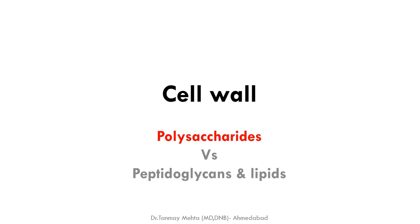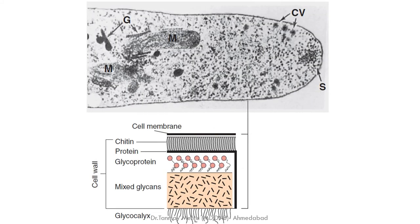Cell wall. The cell wall of fungi is made up of polysaccharides, while that of bacteria is made up of peptidoglycans, and in the case of gram-negative bacteria, lipids and peptidoglycans. This is a fungal cell wall, which shows chitin, glycoprotein, and mixed glycans — all polysaccharides present in fungal cell walls.